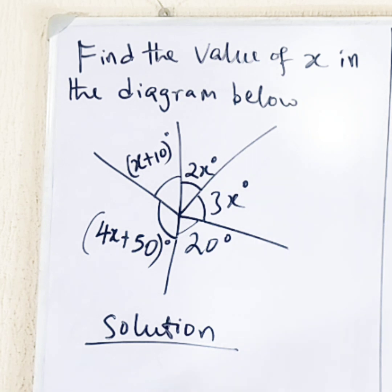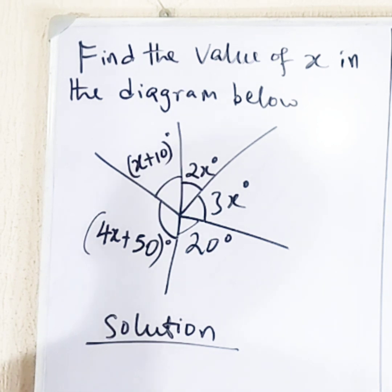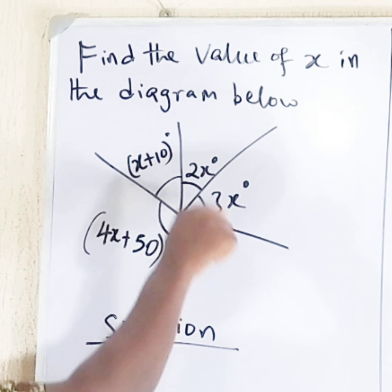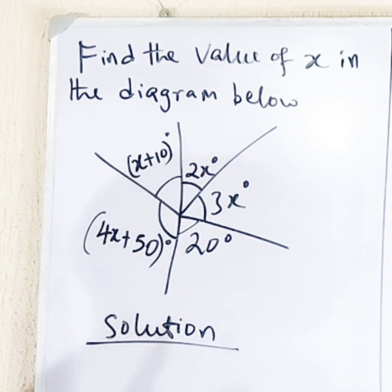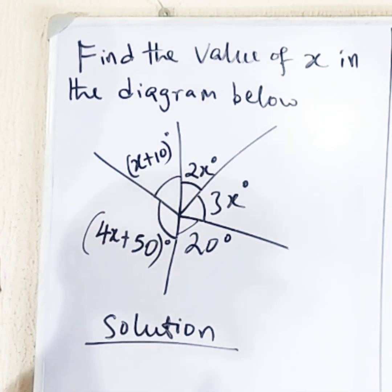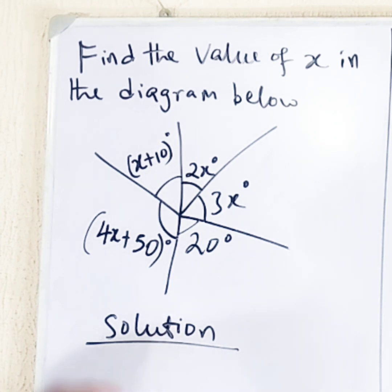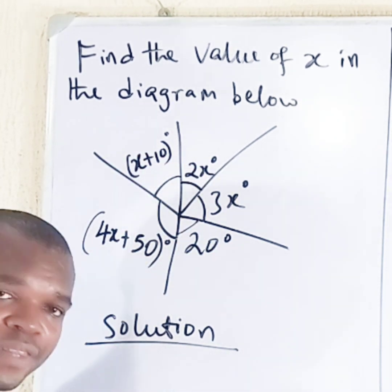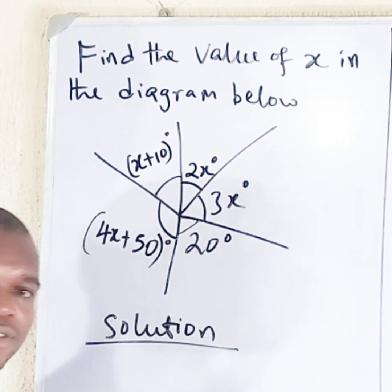So how are we going to solve this problem? If you look at this diagram, you will observe that if you add all these things together, you are going to have angles in a circle. It means that we are going to add all of them and make it equal to 360 degrees.